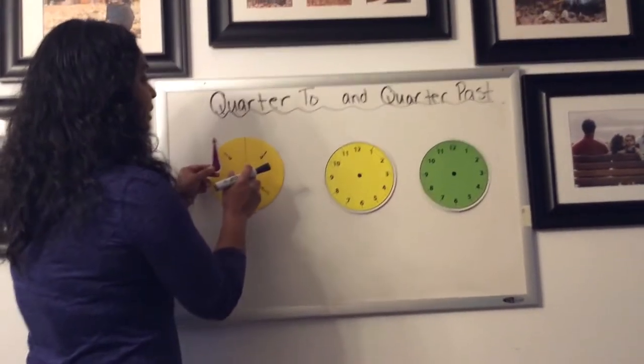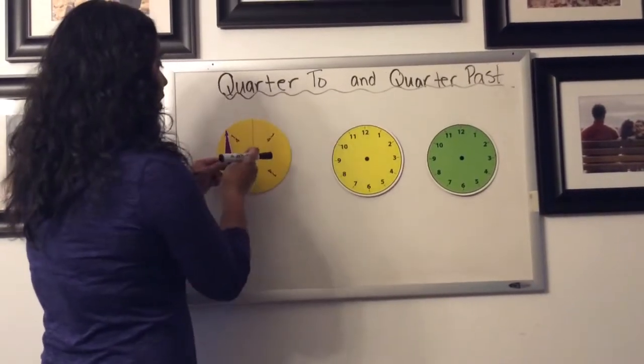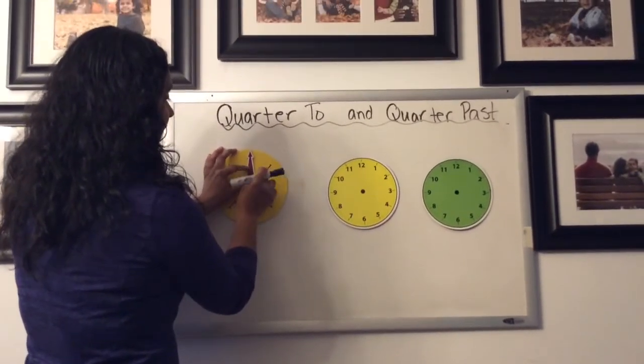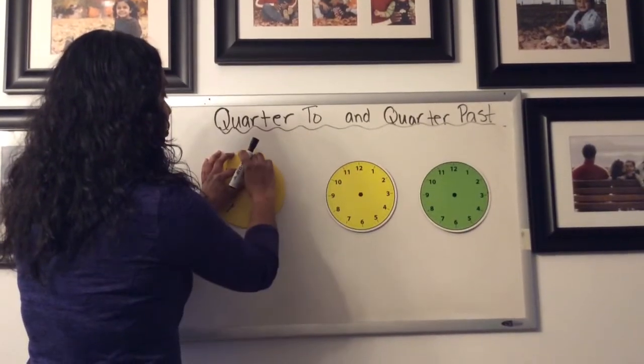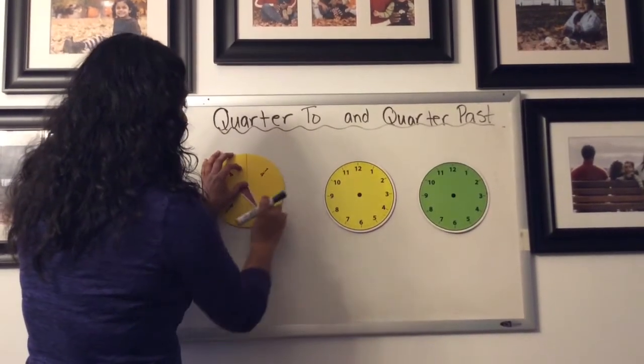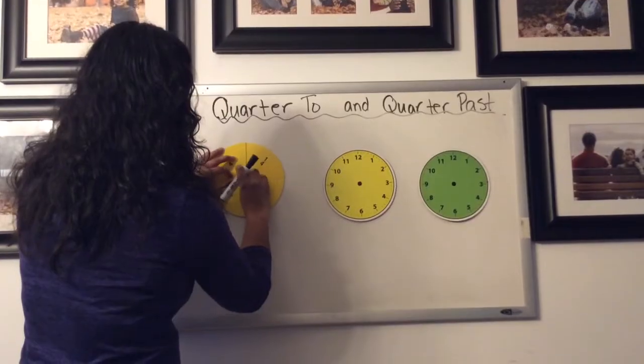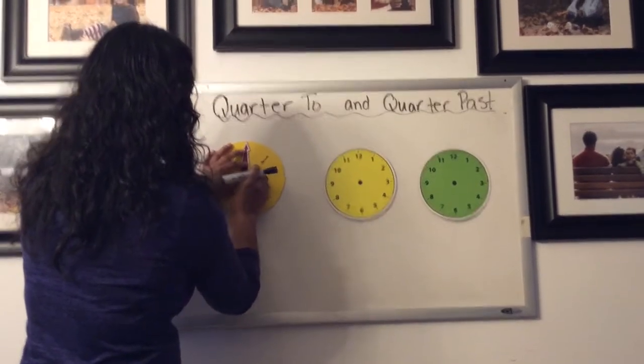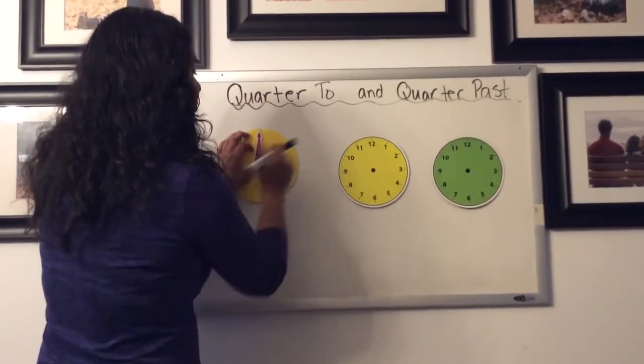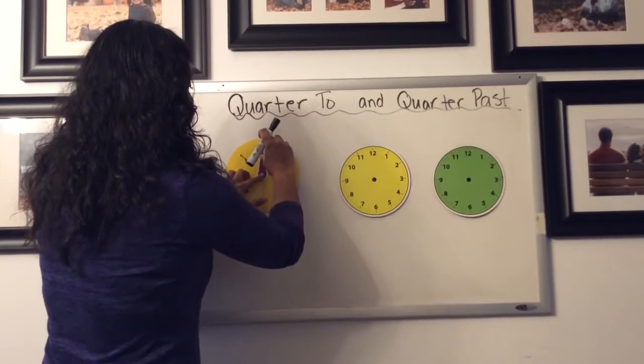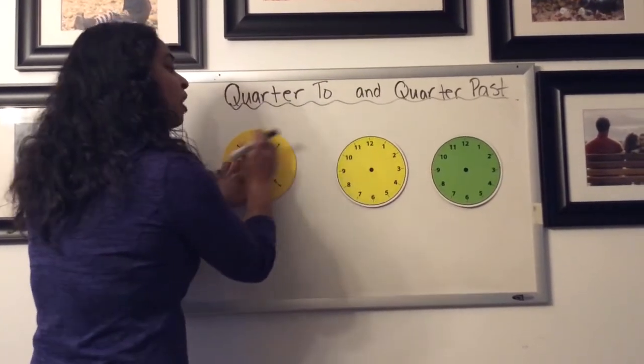If we think about that in relation to a clock, if we are here with our minute hand pointing up at the 12, a full turn around the clock would bring us back here, and that would be when the next hour would start. If we want to think about how far we would go if we went a quarter of the way around our clock, it would end up being here.